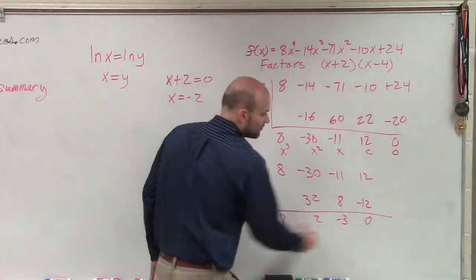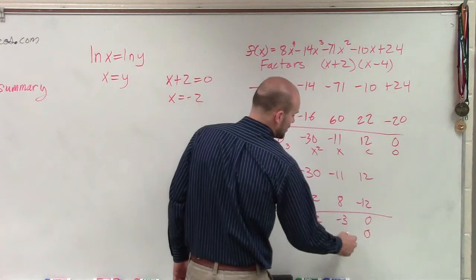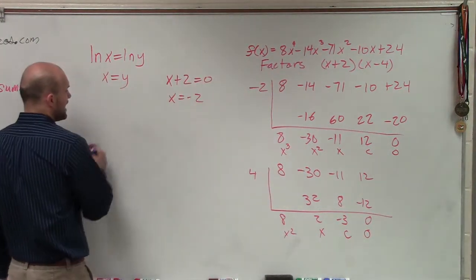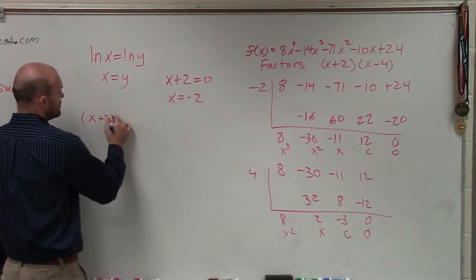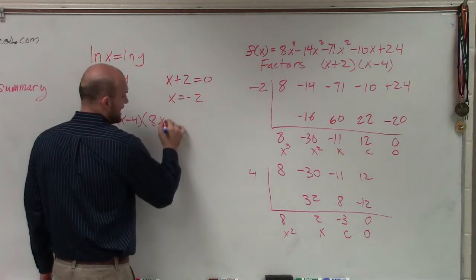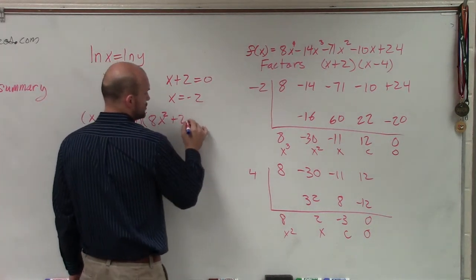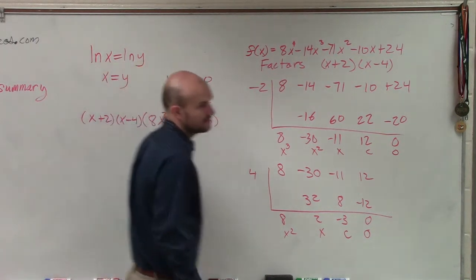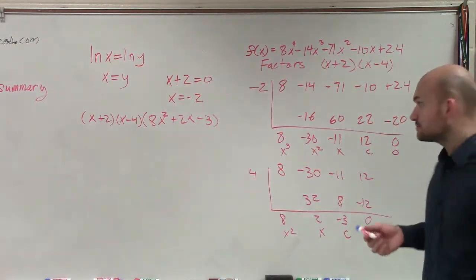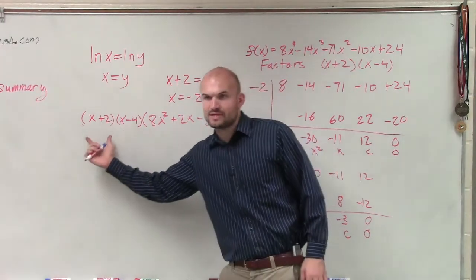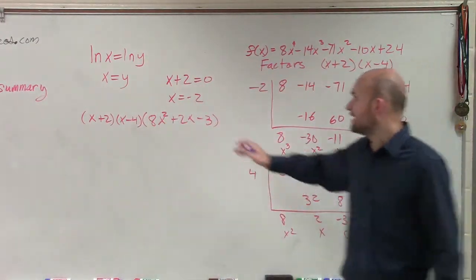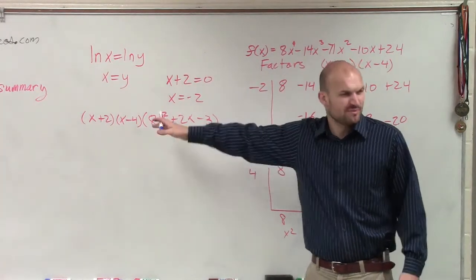Now to write my final quotient, which is constant, linear, quadratic. So therefore, I have (x+2) times (x-4) times (8x²+2x-3). Those are the factors so far that we have. These are the factors that were given. And when we applied synthetic division twice, we got this last remaining factor. But can we factor this further?